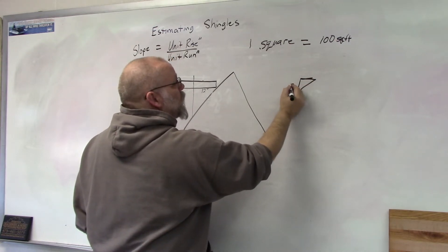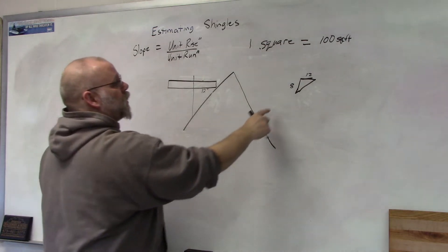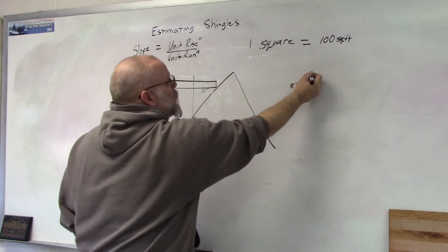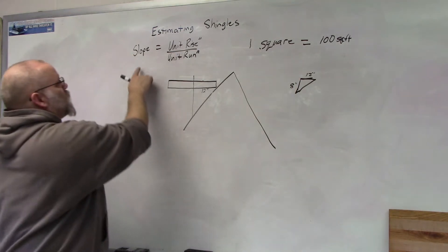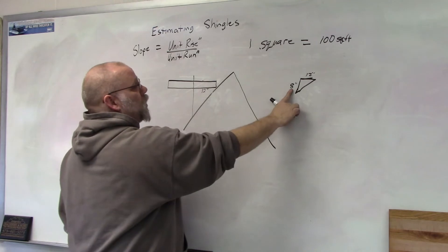on the roof that says it's an 8/12. What does that mean? These are in inches, so this is 8 over 12. Slope is identified as unit rise over unit run, so the unit rise would be 8 and the unit run would be 12.